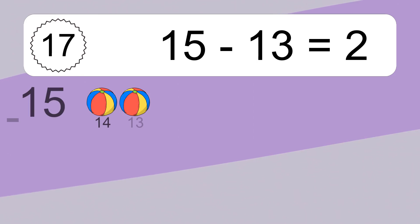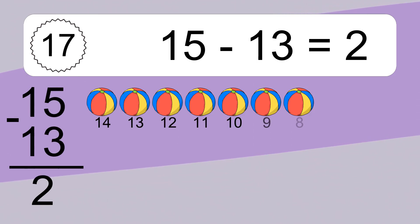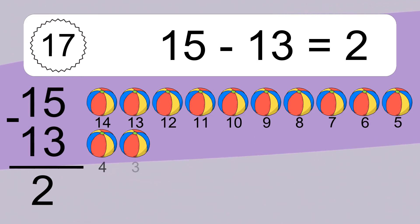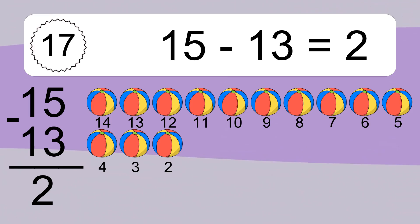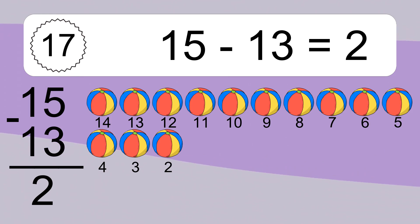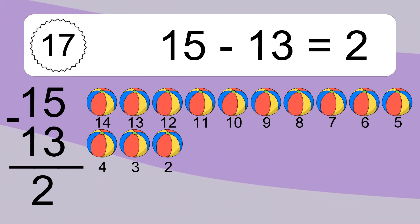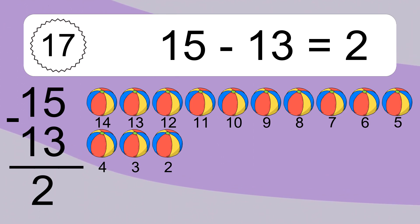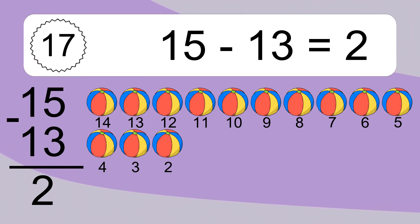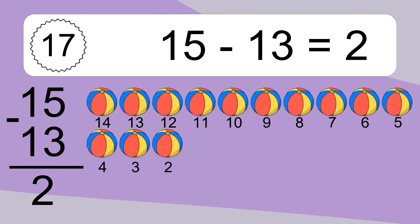15 minus 13 equals what? 15 minus 13 equals 2. Let's count it. 14, 13, 12, 11, 10, 9, 8, 7, 6, 5, 4, 3, 2.